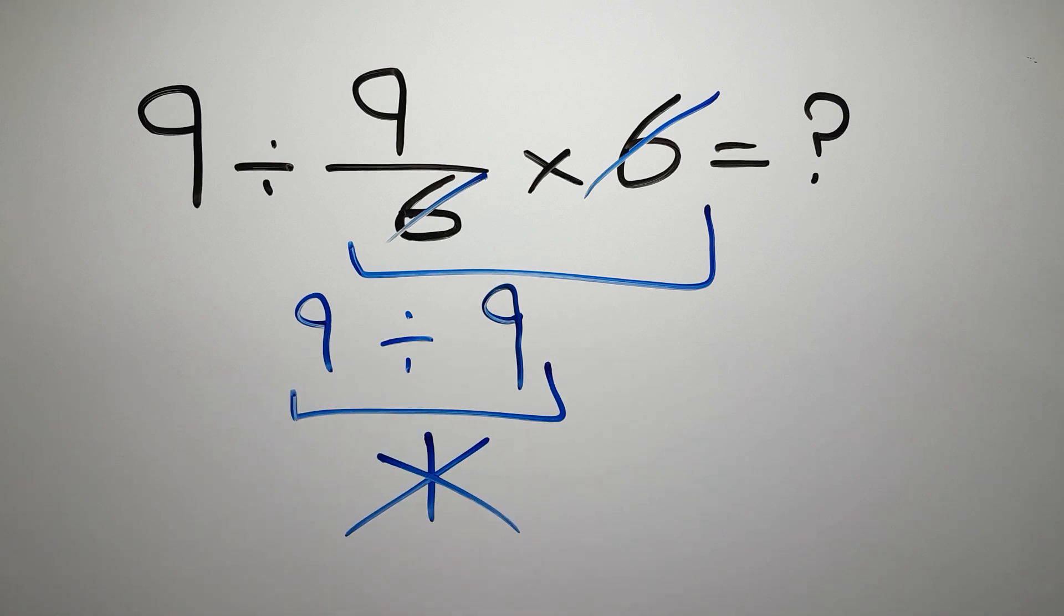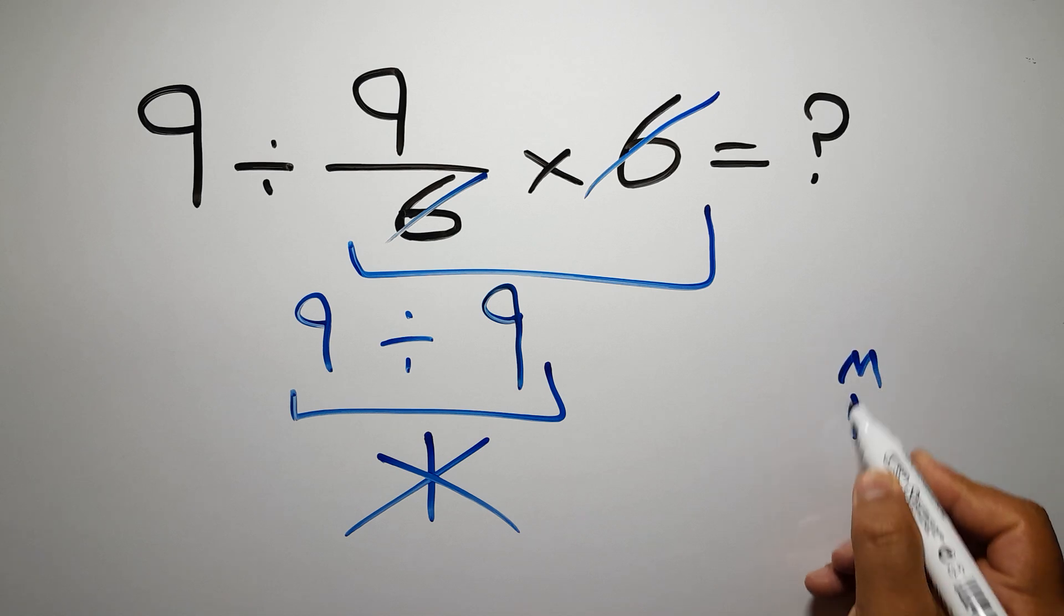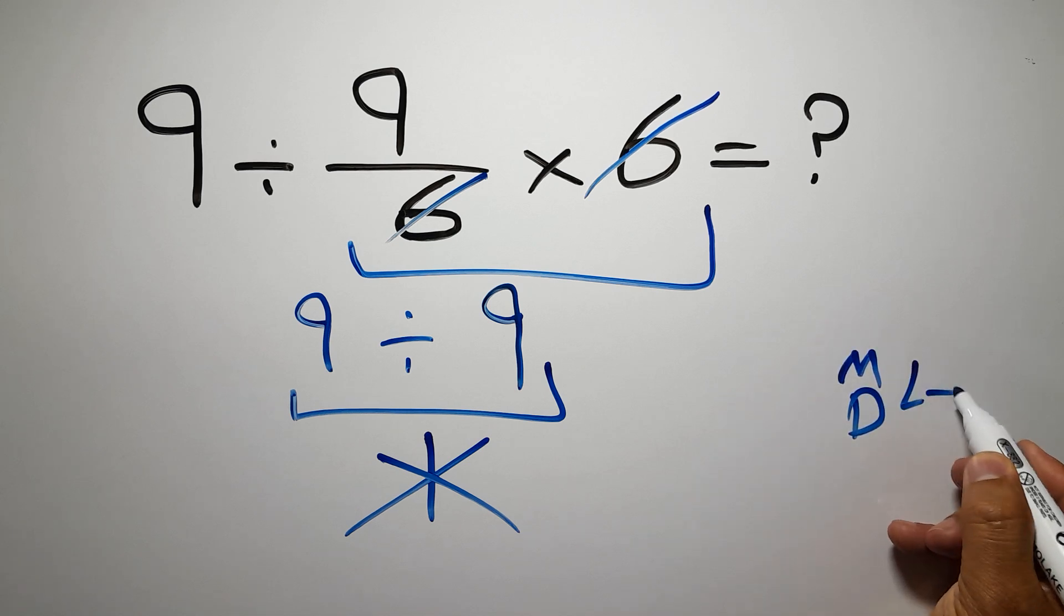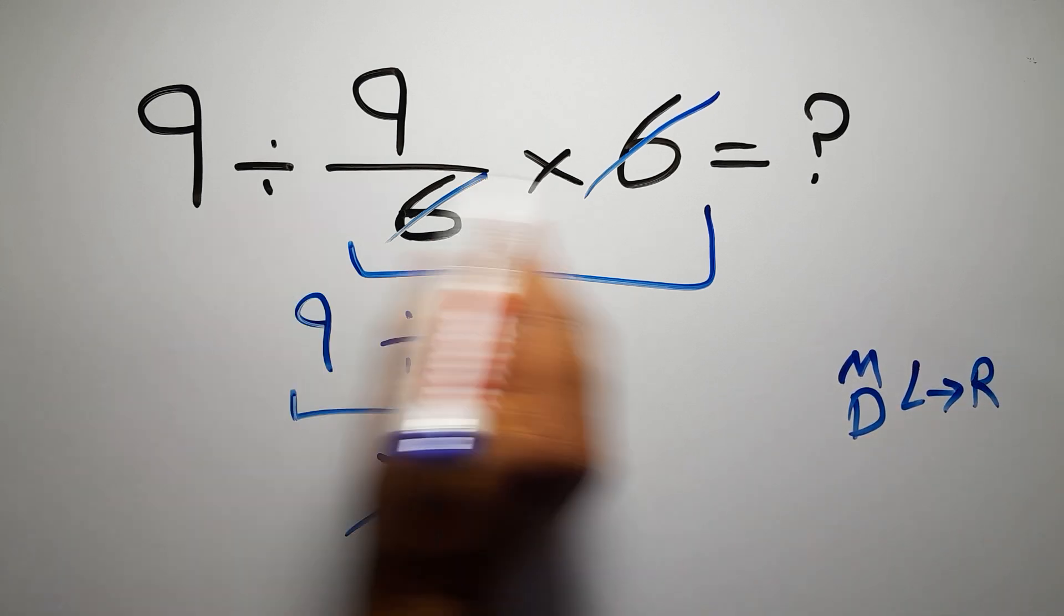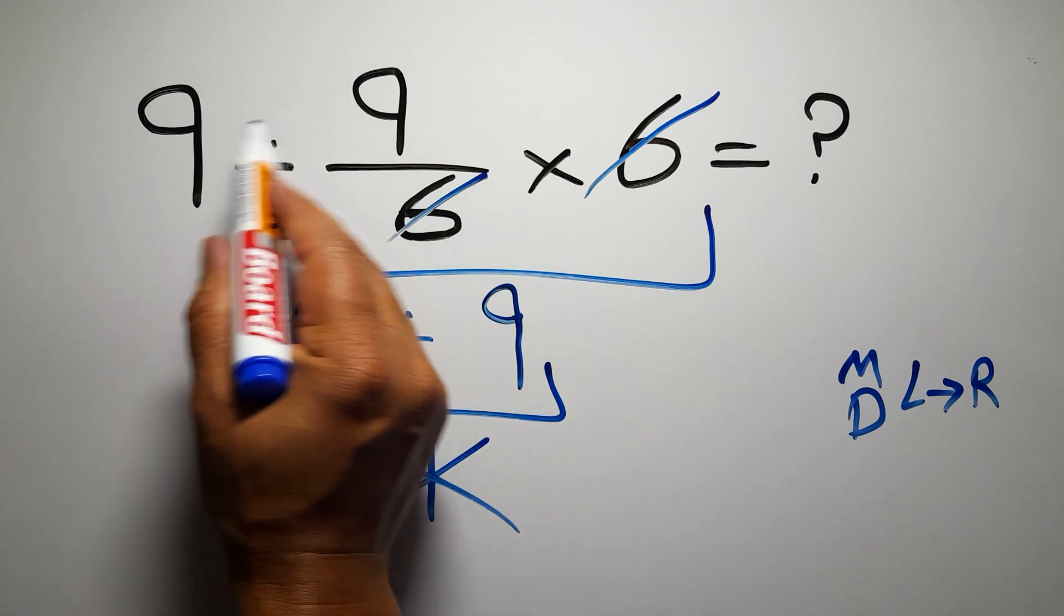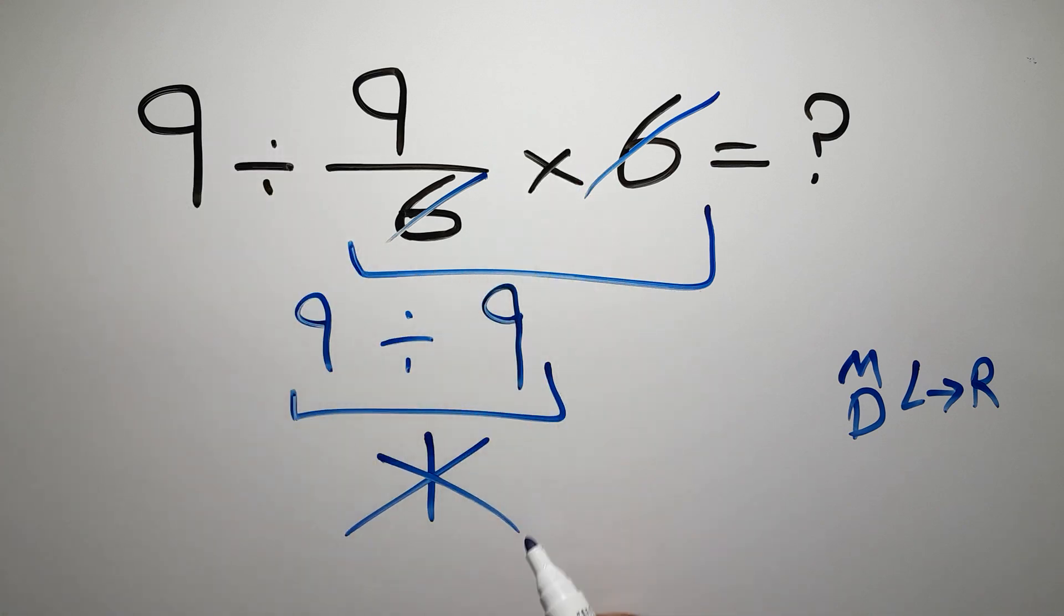Because according to the order of operations, multiplication and division have equal priority and we have to work from left to right. So here, first we have to do this division, then this multiplication. If we do this multiplication before this division, it is wrong.